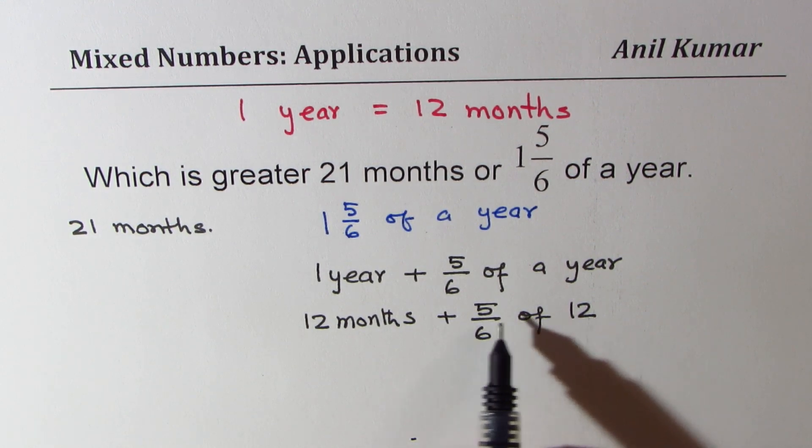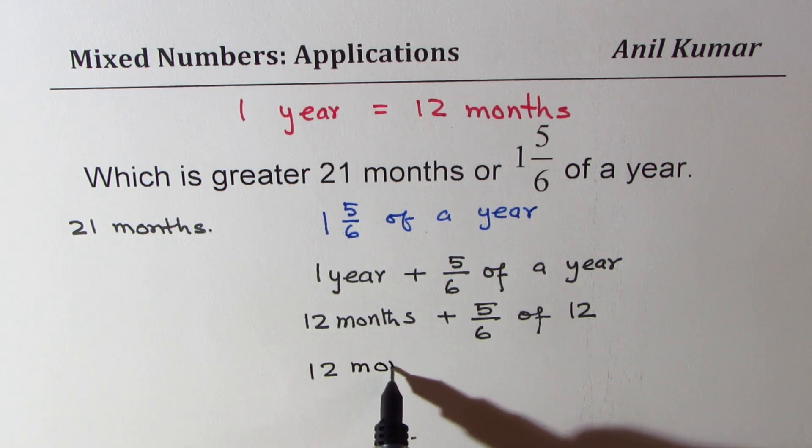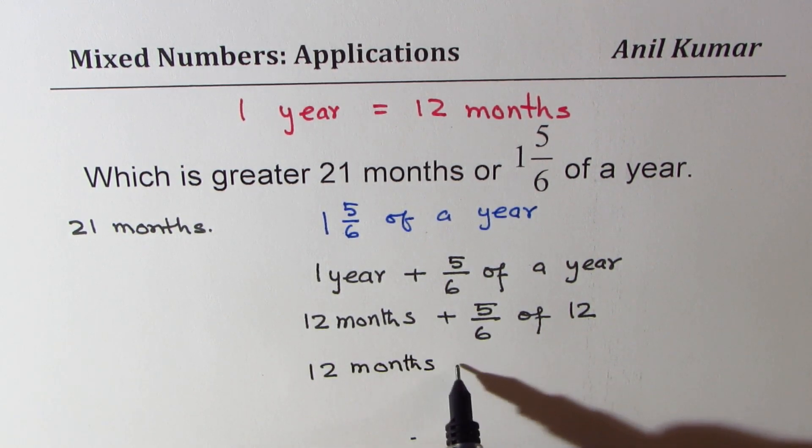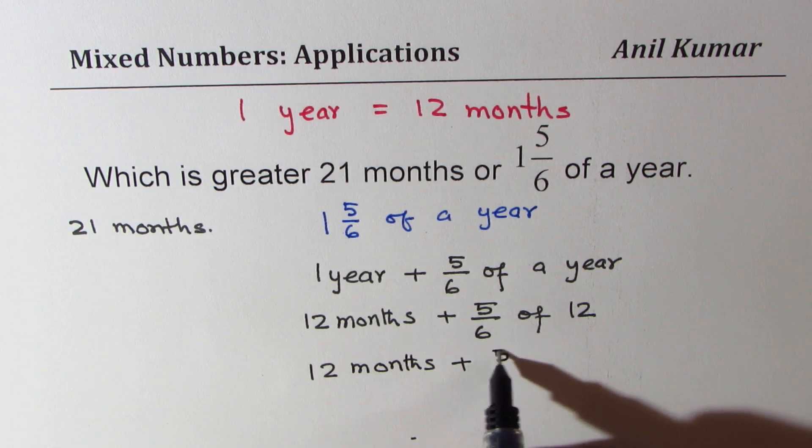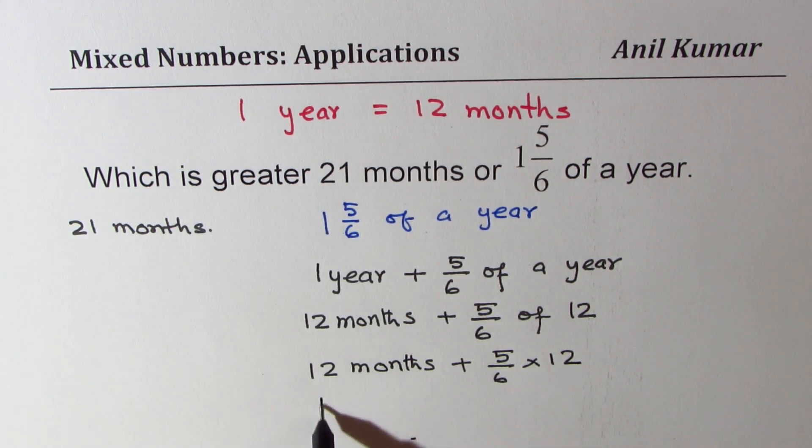will be 2, and then times 5 will be 10. So we get 12 months plus—you write this as 5/6 of, means times, 12. You get the idea, right? So now this could be written as 12